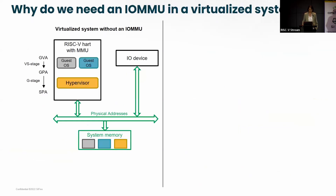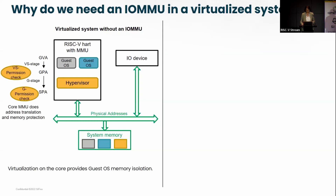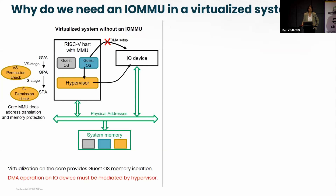Now let's look at the virtualized system — the same system-on-chip, but with a RISC-V core with the hypervisor extension. We have a couple of guests using guest virtual addresses. The MMU performs two-stage translation: from guest virtual address to guest physical address using the VS stage page tables, and then from guest physical address to supervisor physical address using the G stage page tables. The memory is well protected and provides isolation between different guest OSes. The device driver on a guest cannot simply program the DMA in the IO device — it has to go through the hypervisor and any DMA operation must be mediated by the hypervisor.